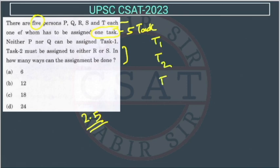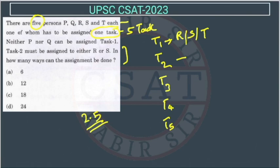So let's do it. There are 5 tasks. Task T1 is not assigned to P or Q, so it can be assigned to either R, S, or T. Task 2 must be assigned to either R or S, so this will be assigned to R or S. Task 3 can be assigned to anyone. There is no condition for tasks 3, 4, and 5.